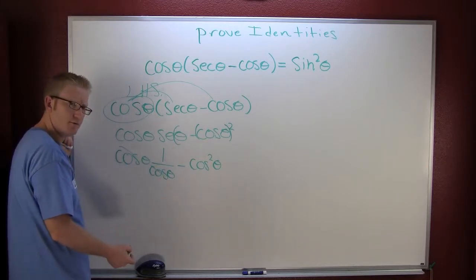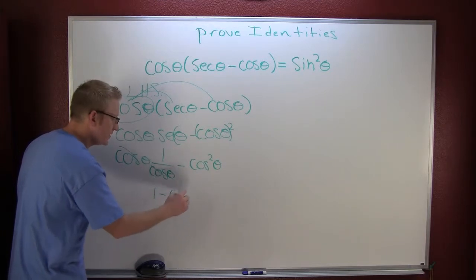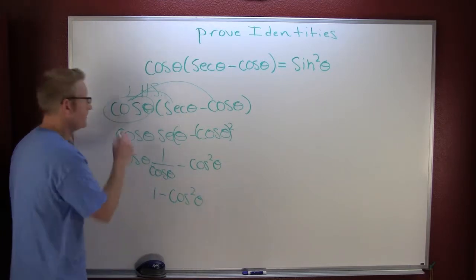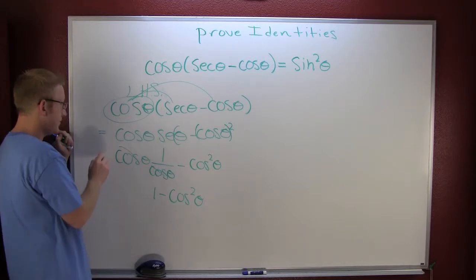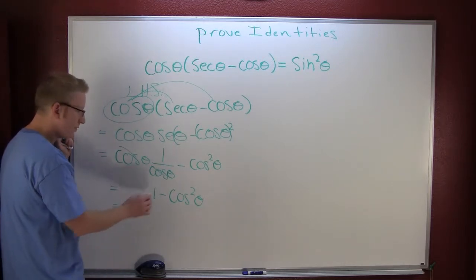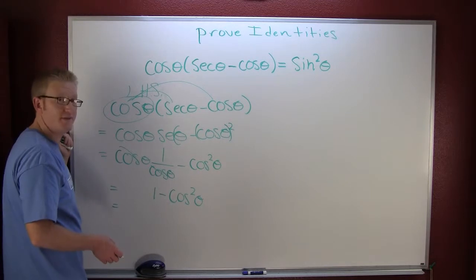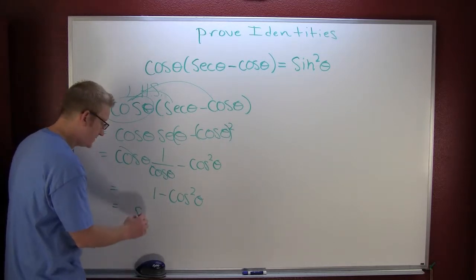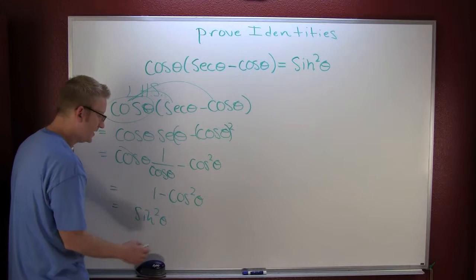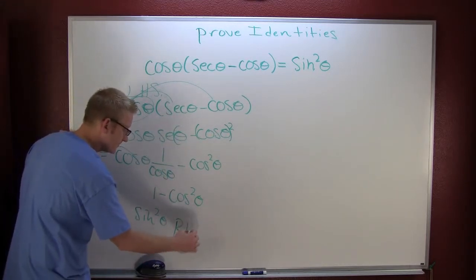Is that zero? No. That's 1 minus the cosine squared theta. So this is the same as that, which is the same as this, which is the same as that. But what's 1 minus the cosine squared? We've seen that a few times now — that's the sine squared theta. Is that the right-hand side? Sure is.